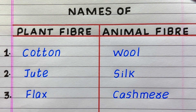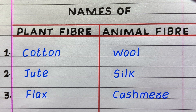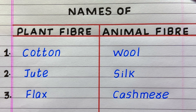Name of the first plant fiber is cotton, second jute, third flax. Name of the first animal fiber is wool, second silk, third kashmiri.